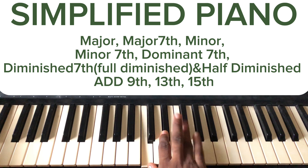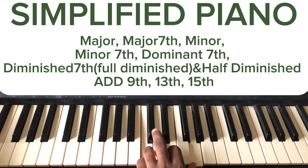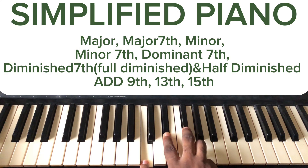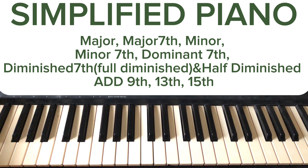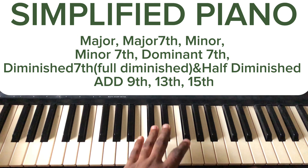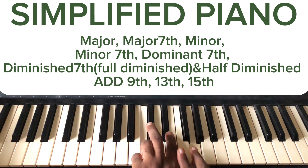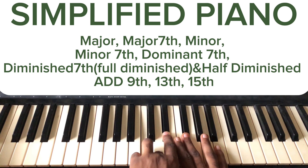When I flat the fifth, it becomes a diminished chord. So this is C major; when I flat the third, it becomes C minor; and when I flat the fifth, it becomes a C diminished chord. To summarize: Major is one, three, five. Minor is one, flat three, five. Diminished is one, flat three, flat five. This is a diminished chord.